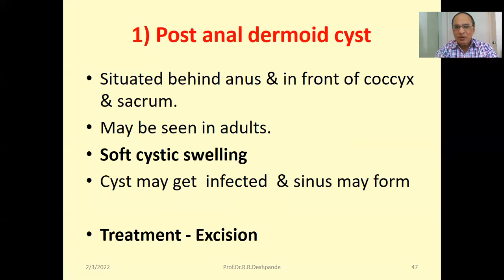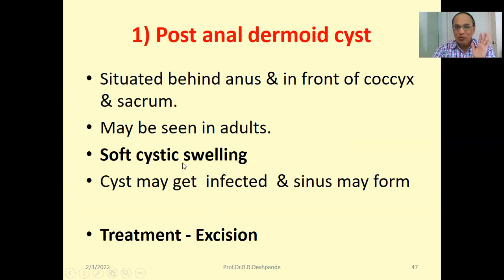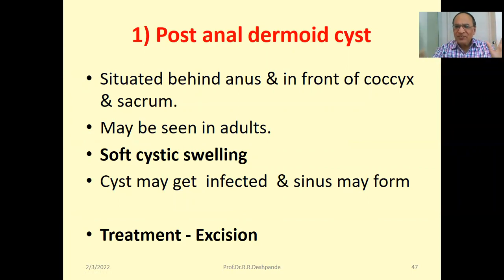Post anal dermoid cyst is situated behind the anus and in front of the coccyx and sacrum. This can be seen in adults also. It is a soft cystic swelling that can get infected and, unfortunately, a sinus will be formed. The best treatment for post anal dermoid cyst is to remove it — excision — because the chances of infection will be there.